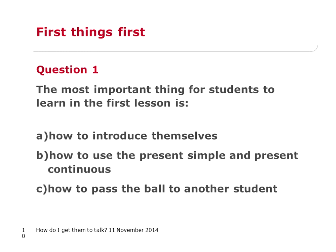As Henry explained, you can choose on the icon under your name and select A, B, or C. We've got lots of choices coming in. For the moment we've got lots of A's — how to introduce themselves. We've got absolutely zero B's, which is interesting because in most course books, lesson one tends to be about present simple and present continuous, depending on the level. We've got a fair number of C's.